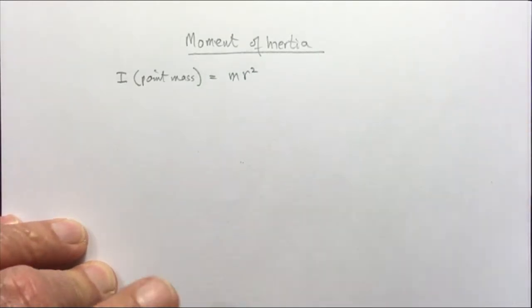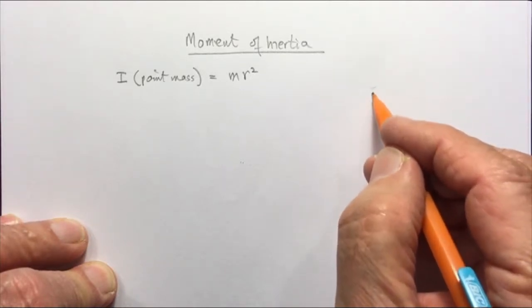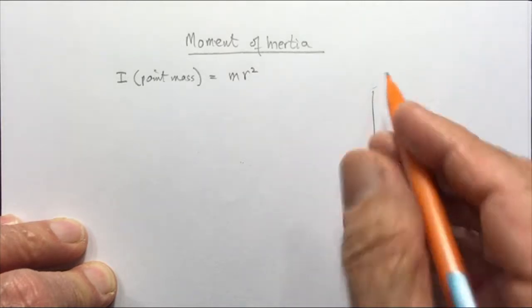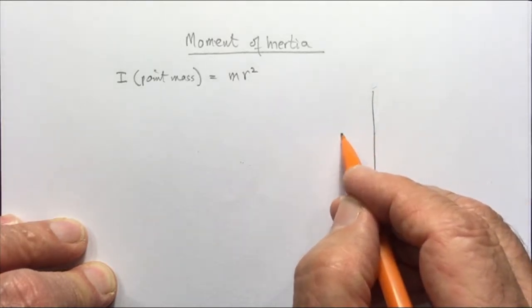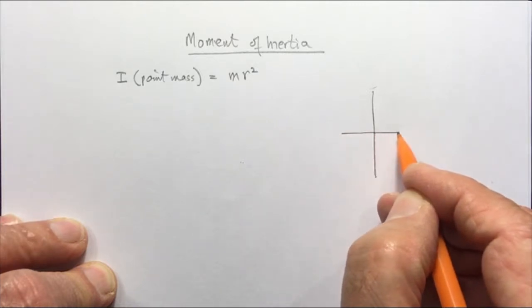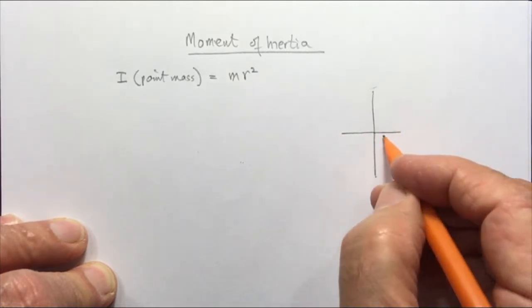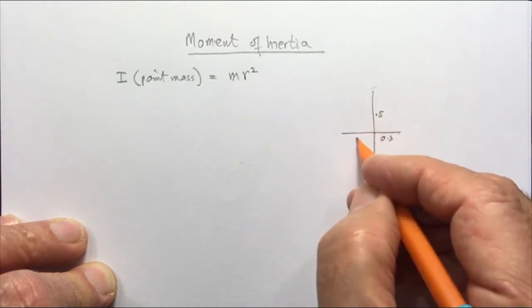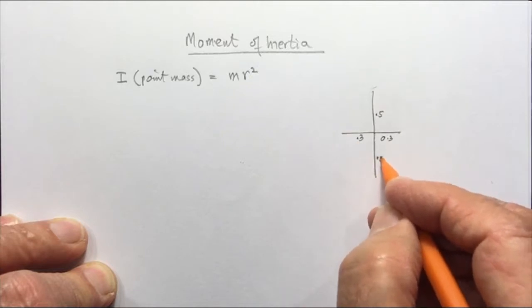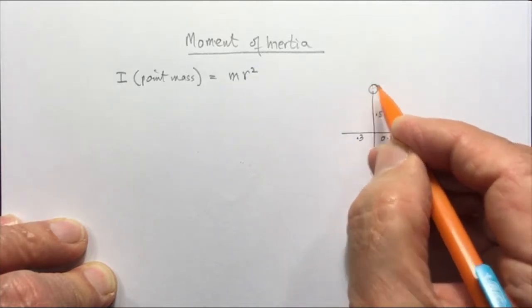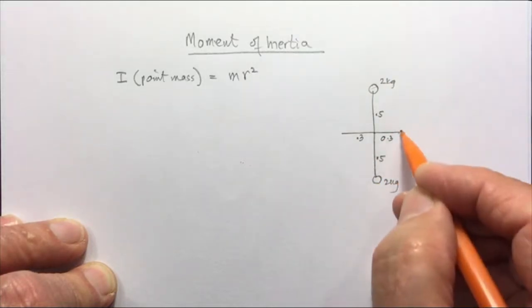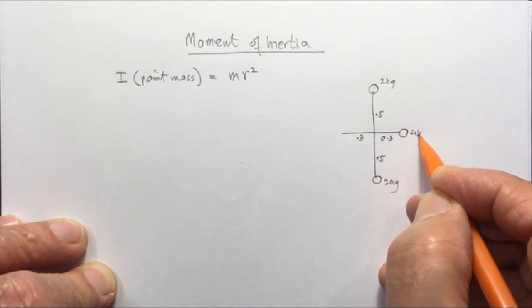Let's do an example involving four discrete masses. We have a very light rod — we'll ignore its mass — with a length of 1 meter, and another rod whose length is 60 centimeters. So this side is 0.3 meters and this is 0.5 meters, 0.3 meters and 0.5 meters. Here we have a mass of 2 kilograms, a 2 kilogram mass here, 4 kilograms here, and here.